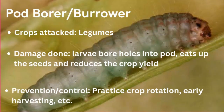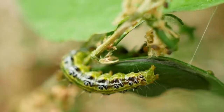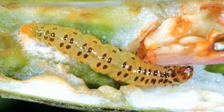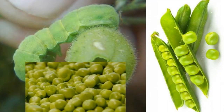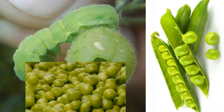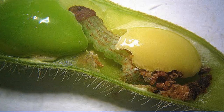The next pest is the pod borer, which is an example of a burrowing crop pest. Pod borers normally attack legumes such as cowpea and soybeans. The larvae bore holes into the pods of crops and eat up the contents, causing a reduction in yield. Preventive measures include practicing crop rotation, harvesting early, and spraying with insecticides. Both crop rotation and early harvest are examples of cultural methods.